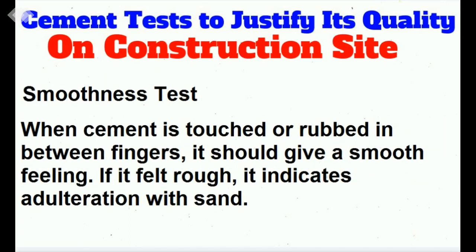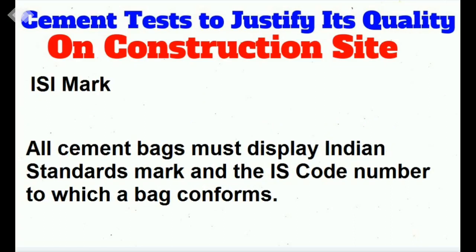The smoothness test: when cement is touched or rubbed between the fingers, it should give a smooth feeling. If it feels rough, it indicates adulteration with sand. ISI mark: all cement bags must display the Indian Standard mark and the IS code number to which the bag confirms. These are the 10 basic tests we can apply on field to check or justify the quality of cement.